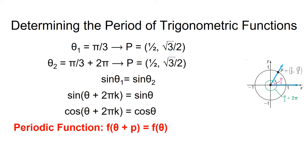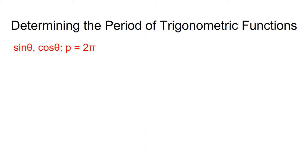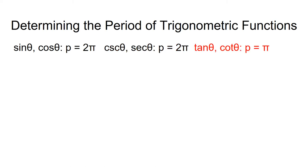A periodic function is defined to be one that repeats every p units; p is the period of the function. For sine theta and cosine theta, the period of each is equal to 2 pi. Because cosecant theta and secant theta are the reciprocals of sine theta and cosine theta respectively, their periods are also 2 pi. The trigonometric functions tangent of theta and cotangent theta both have period pi. Once we know the values of a trig function over a single period, we know all its values, and we can use this to help us solve problems.